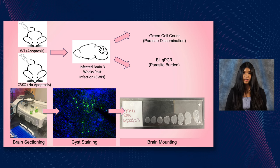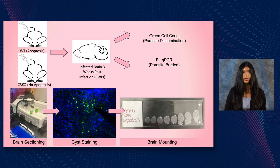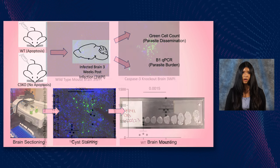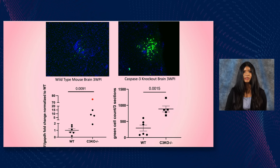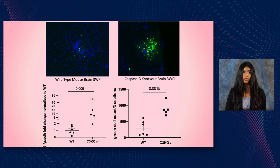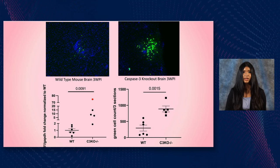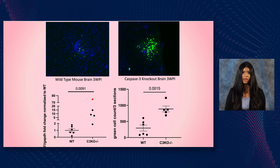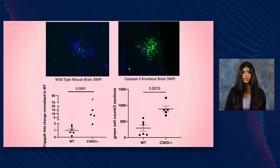After sectioning the brains, we performed a cyst stain to clearly visualize Toxoplasma and TINs, which appear as green cells. Simultaneously, I performed a quantitative PCR to measure parasite genomes in the brains. Both approaches led to the similar conclusion that caspase-3 knockout brains had significantly more green cells and parasites compared to wild-type, suggesting that apoptosis is being induced by the parasite in TINs. This allows our lab to learn more about the persistence of the parasite in the brain and conduct further studies. Thank you.